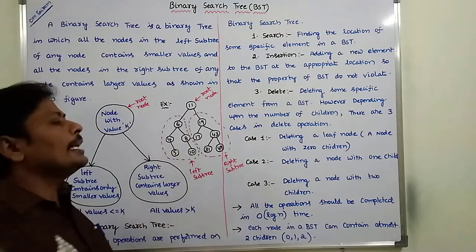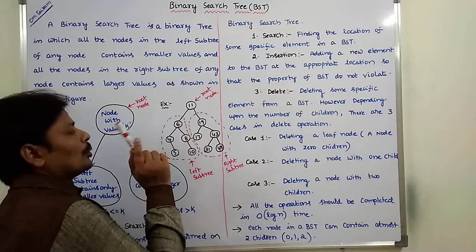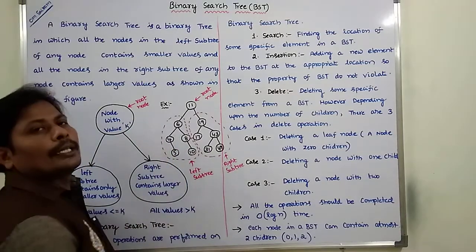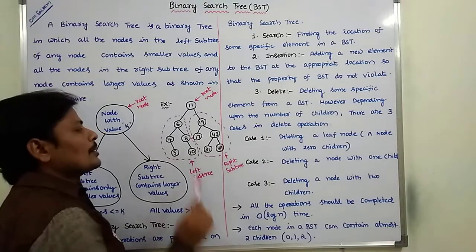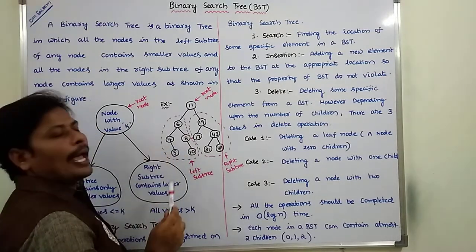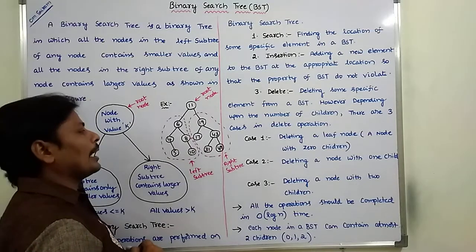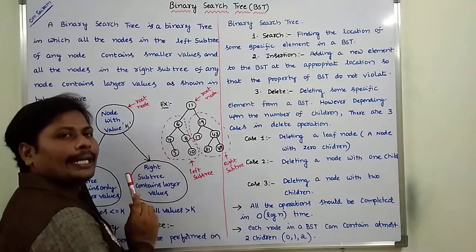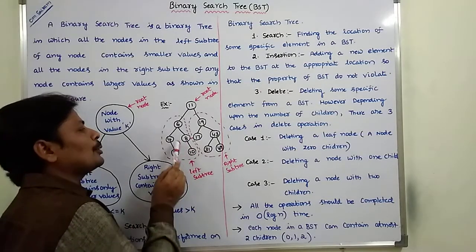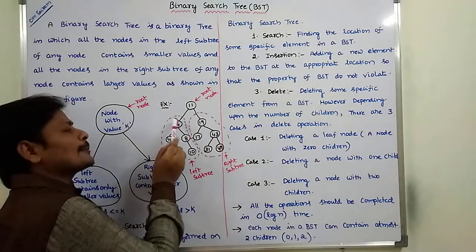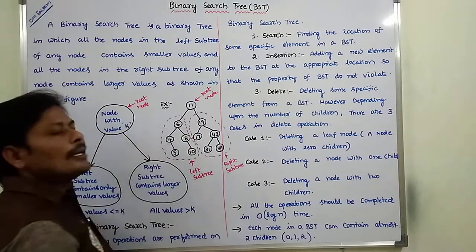Second case: deleting a node with one child. For example, we want to delete node 8. The deleted node has one child, that is 10. Simply we delete node 8 and its child 10 is added to the deleted node's parent, that is node 6.